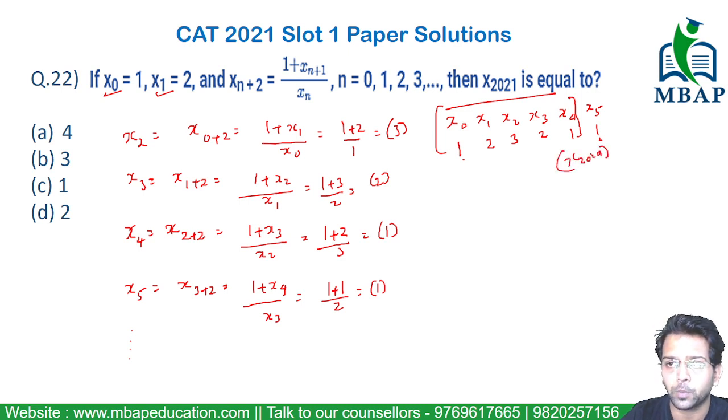It's a simple logic-based question. All you need to do is find the logical term. You will find x₆ to be 2, x₇ will be 3, x₈ will be 2, x₉ will again be 1. So the series is going on by 5, repeating every 5 terms. And x₂₀₂₁ will be the same as x₁.